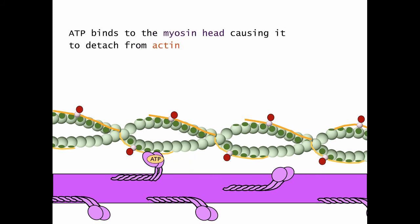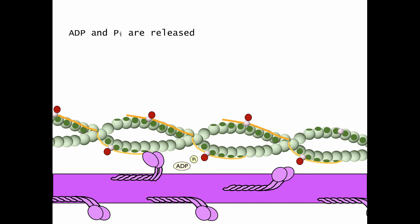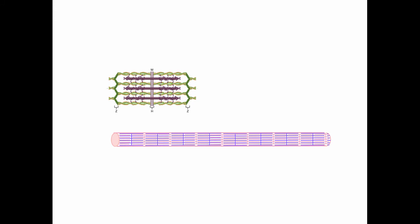ATP will then bind to the myosin head, causing it to detach from actin. Energy released from the hydrolysis of ATP will reset the myosin head to its original position. It can now reattach to actin as long as the active sites are open. Another power stroke will occur because ADP and phosphate are released, and this crossbridge cycle will continue. As long as calcium is bound to troponin, all myosin heads will attach and detach using this mechanism so that the sarcomeres shorten and the muscle shortens.